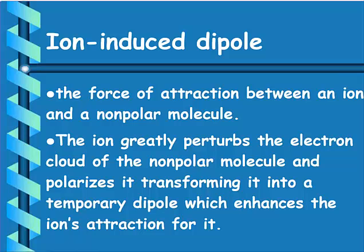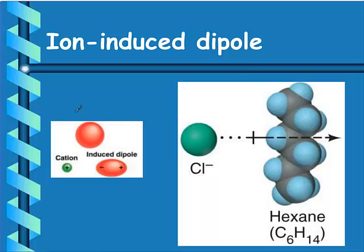An ion-induced dipole is the force of attraction between an ion and a nonpolar molecule. The ion perturbs the electron cloud of the nonpolar molecule — it polarizes it — transforming it into a temporary dipole, which is then attracted to the ion. For example, when chlorine comes near hexane, one side of hexane becomes slightly positive and the other slightly negative, which can then attract the next hexane molecule, and so on.